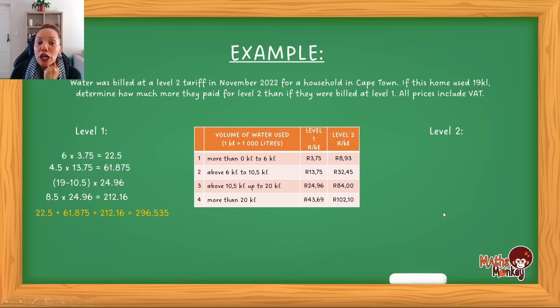Then we do the exact same, but we're now going to be using the level two tariffs. So again, the six, but now it's charged, it's a bit more expensive. Then the next 4.5 will be charged at 32.45. Then the next one, 8.5 will be charged at 84.00. And then the total will then be the 53, which is the first six, the next 4.5 and the next 8.5, which gives us a total of 19 will then cost 913.605. Note, I didn't round off any of these answers yet because it's not my final answer.